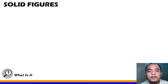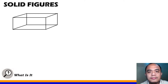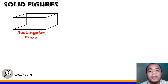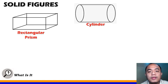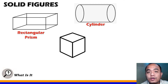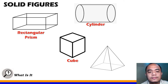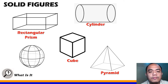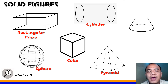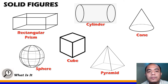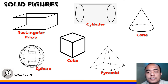Let us identify the solid figures. That's a rectangular prism. Next, we have the cylinder. Next, we have the cube. Next, that's a pyramid. And we have the sphere and the cone. These are some examples of solid figures: rectangular prism, cylinder, cube, sphere, pyramid, and cone.